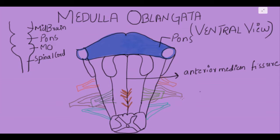In the middle we have the anterior median fissure, and lateral to it on both sides we get a swelling-type surface, and we call that the pyramid. It is basically a swelling on either side of the anterior median fissure.